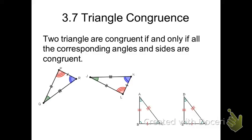In the two pictures below, we have two pairs of triangles that are congruent to each other. By definition, two triangles are congruent to each other if and only if all three sides of one triangle are congruent to all three sides of another triangle, and all three angles of one triangle are congruent to all three angles of another triangle. Both these pairs of pictures clearly show that with the markings on them.